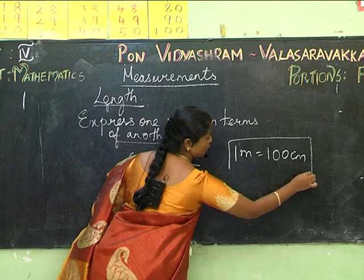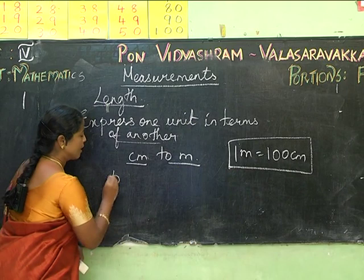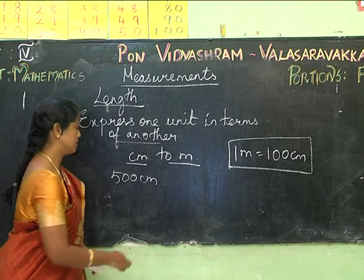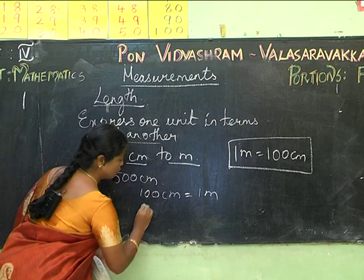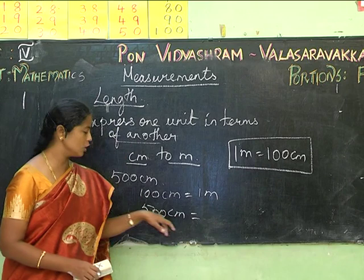Now if I have 500 centimeters, how can I express that in meters? 100 centimeters equals one meter, so 500 centimeters equals 5 meters, because there are five hundreds in 500.